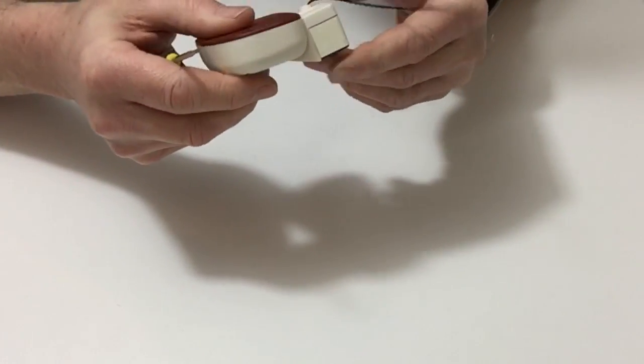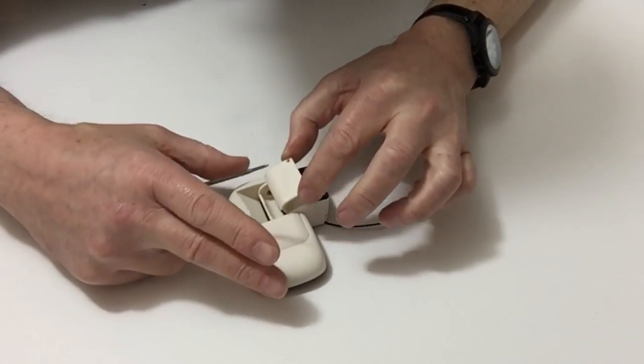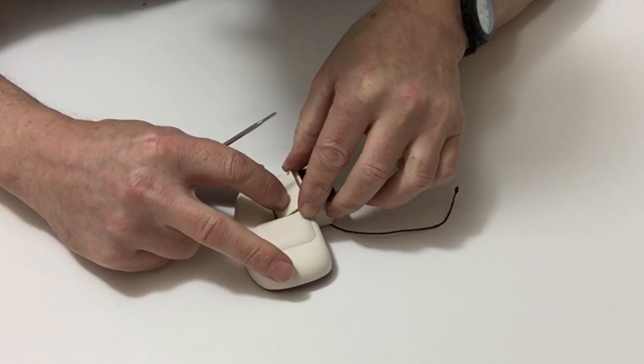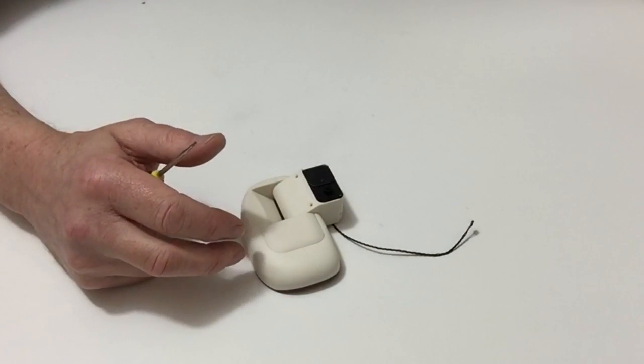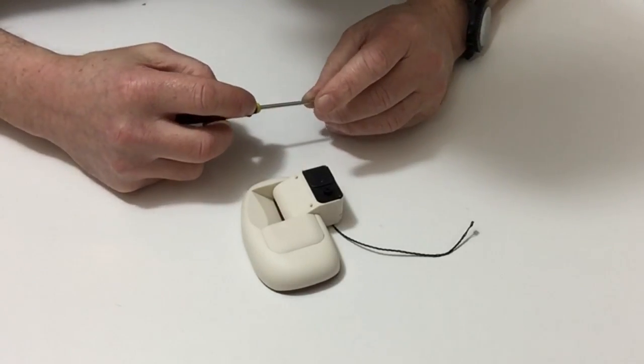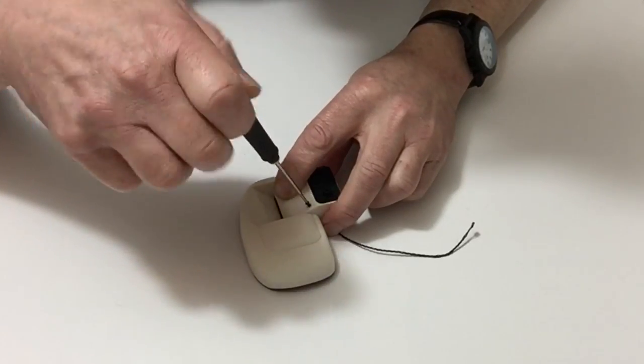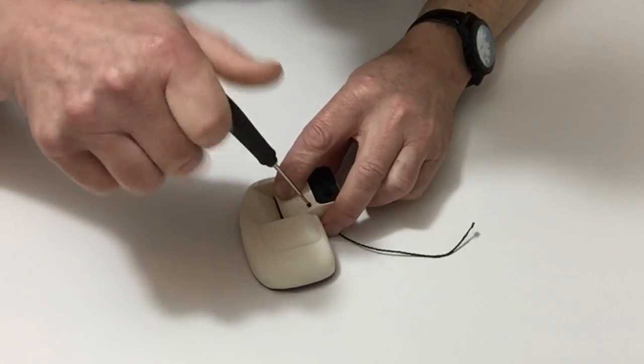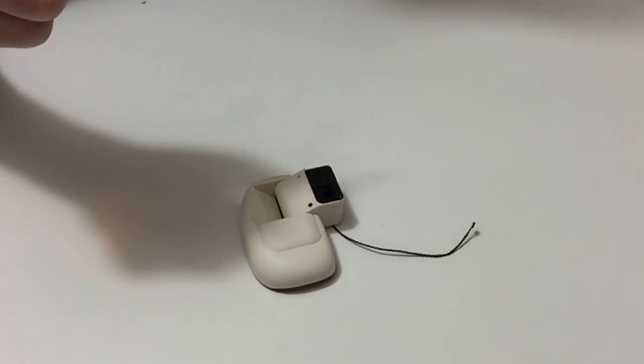Take the cover, place that over the top like so, and then take two of your 6mm countersunk screws supplied. Once again, screw that down, securing that into position.